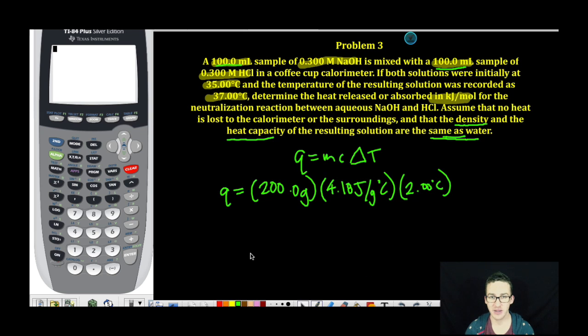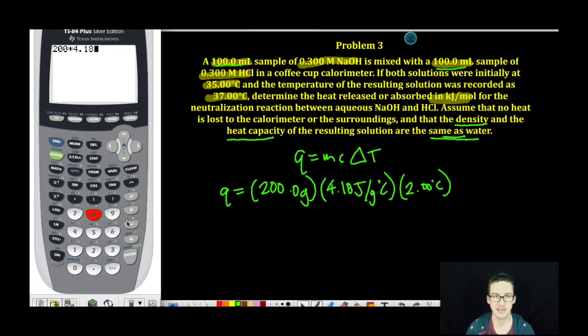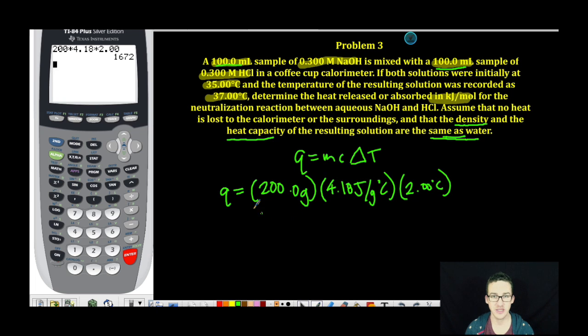Now, it's just a quick trip to the calculator. 200 times 4.18 times 2.00 to three significant figures, I get 1670 joules of heat that was released. So because it was released, I'm going to put a negative sign here simply indicating that the heat was given off. I know that the heat was given off because I go from a cooler temperature to a warmer temperature.